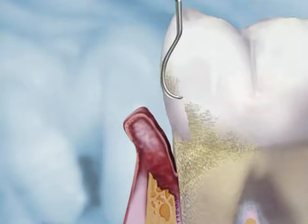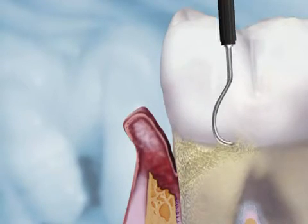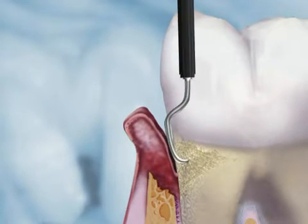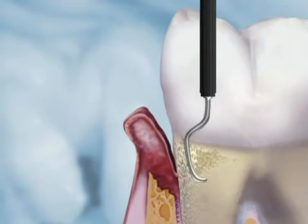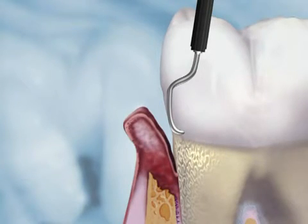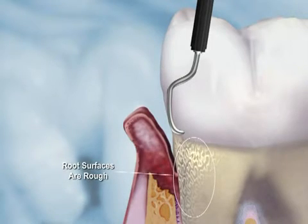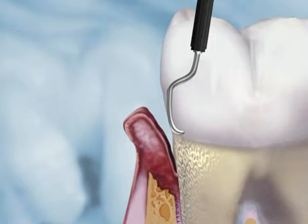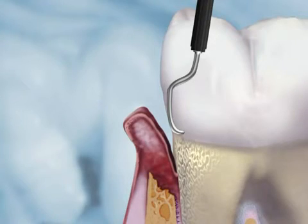Scaling and root planing may be recommended as the first step in actively controlling your periodontal disease. It consists of a very thorough cleaning and smoothing of all the surfaces of the tooth and root to remove plaque and calculus below the gum line to the bottom of the pocket. Root surfaces are rough due to deposits of plaque and calculus tartar buildup attached to your root surfaces — you can think of it as coral or barnacles attached to the tooth under the gum line. The roughness harbors plaque and bacteria, which is irritating to your gum tissue, causing inflammation.